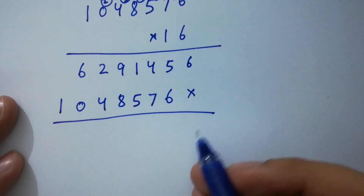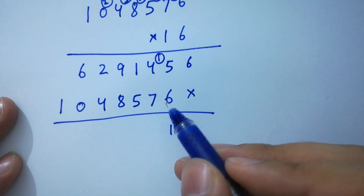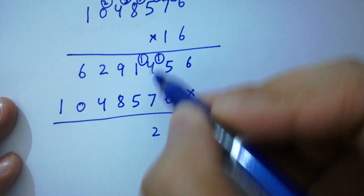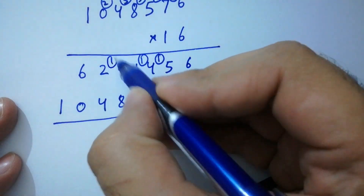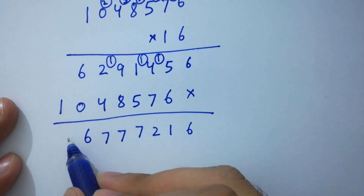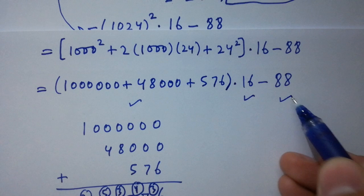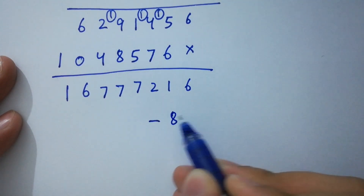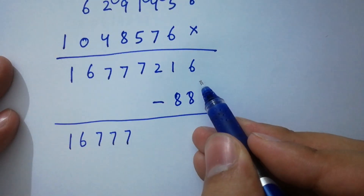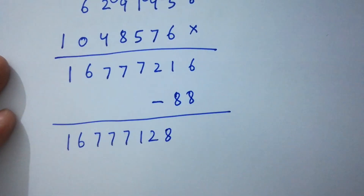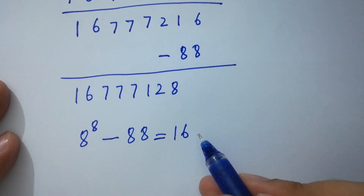Now add the partial products: 6; 6 plus 5 is 11, write 1 carry 1; 7 plus 4 is 11 plus 1 is 12, write 2 carry 1; 5 plus 1 is 6 plus 1 is 7; 9 plus 8 is 17, write 7 carry 1; 4 plus 2 is 6 plus 1 is 7; 6 plus 0 is 6; and 1 as it is. So we get 16,777,216. In the last step, minus 88 gives us 16,777,128.